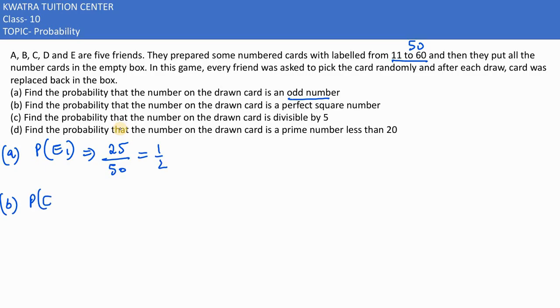In this part, they are saying what is the probability that the drawn card is a perfect square number? A perfect square number, if I can write it. Starting from 16, 25 will be perfect, 36 will be perfect, 49 will be perfect. So this is nothing but 4 by 50.